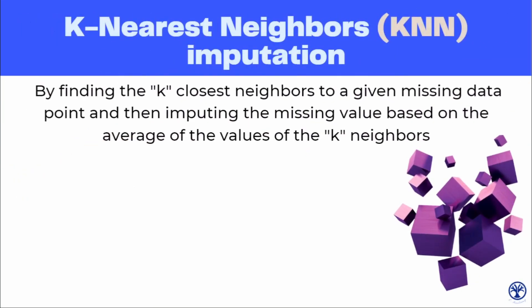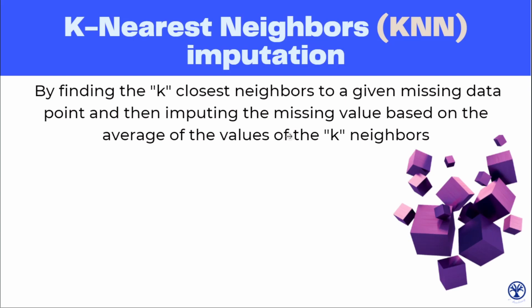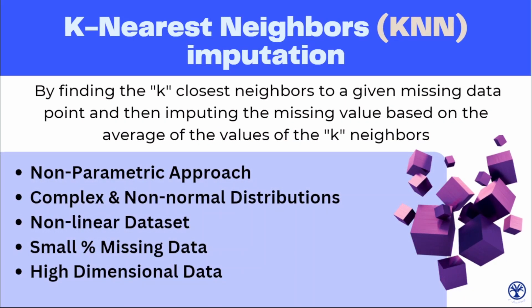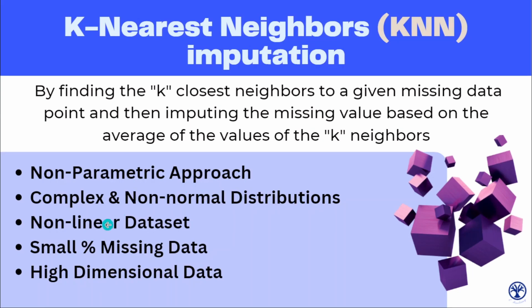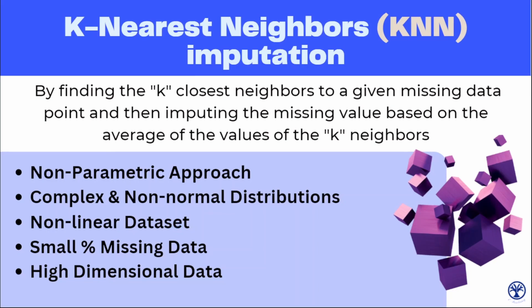Moving to the other approach — KNN, short for K-Nearest Neighbors — it is one of the most simple imputation techniques. The main idea is just like predictive modeling: find the nearest neighbors of each missing value and fill it with the average of the values of its K nearest neighbors. KNN imputation is a non-parametric approach, so we don't have to worry about any assumptions of the dataset. This makes it a good choice for datasets with complex or non-normal distributions, or even non-linear datasets, because it can capture relationships by considering the distances between data points.